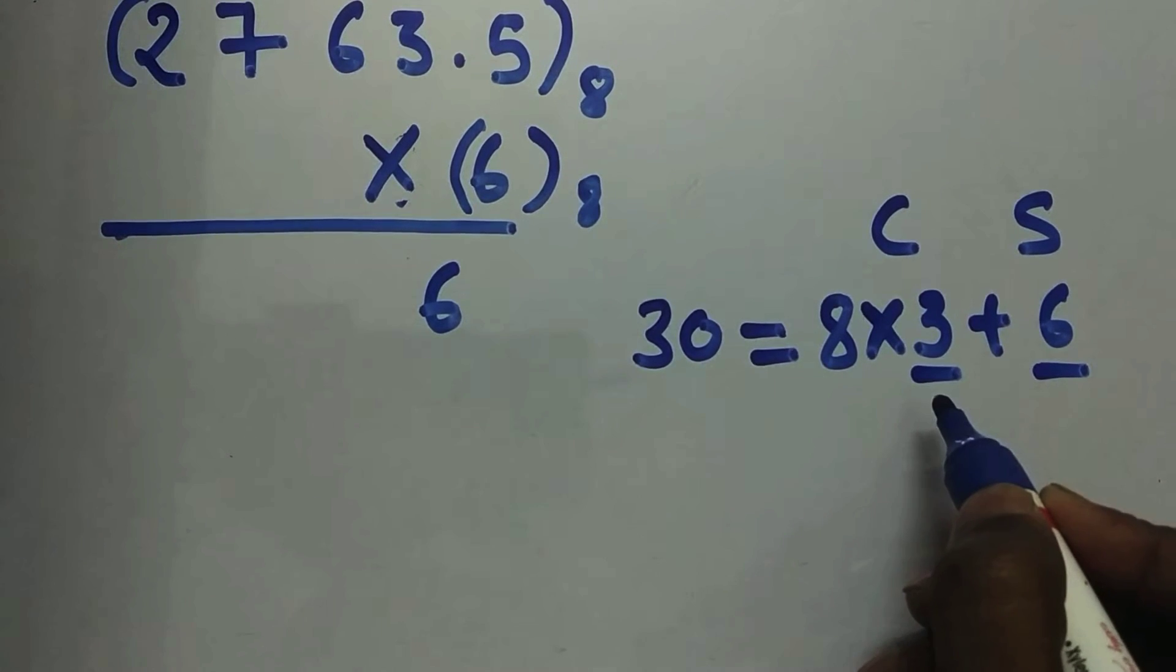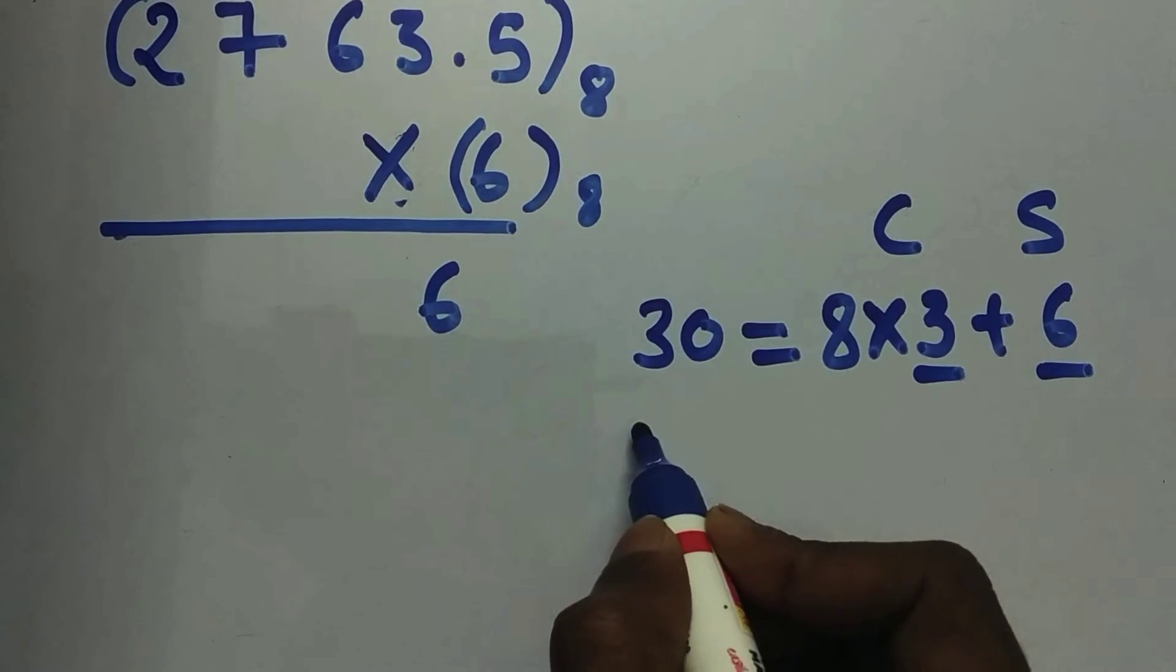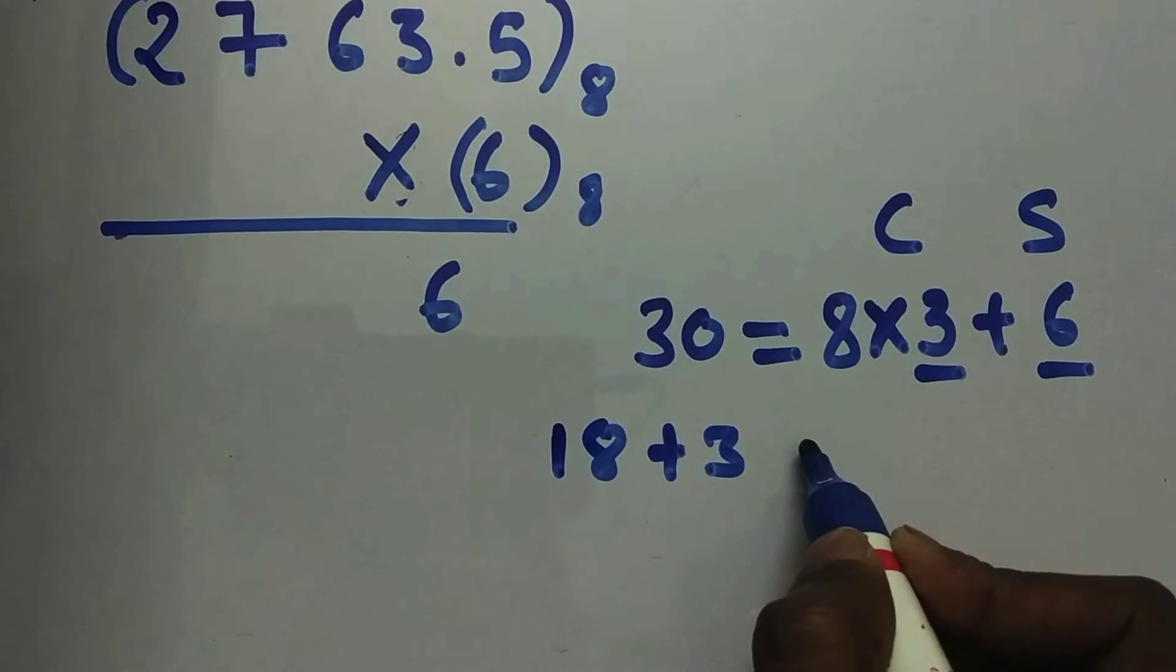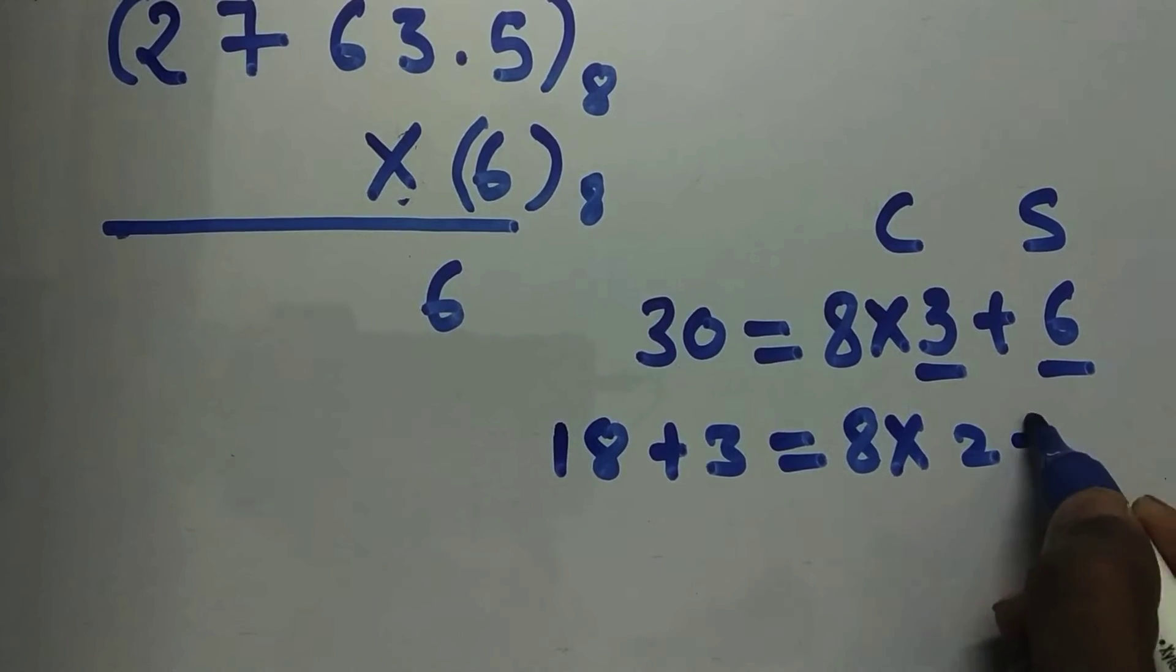The next product is 6 into 3, which is 18. So 18 plus 3 is 21. 21 is 8 into 2 plus 5, so sum will be written over here and 2 will be added again.